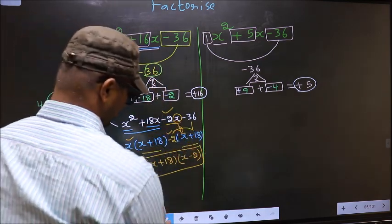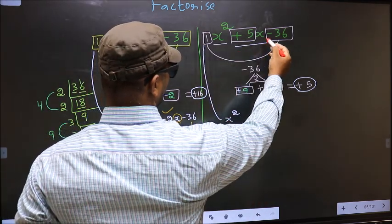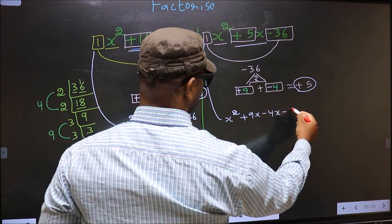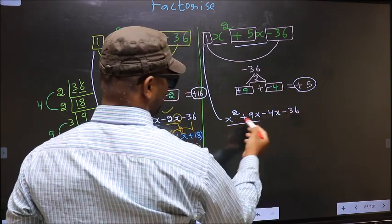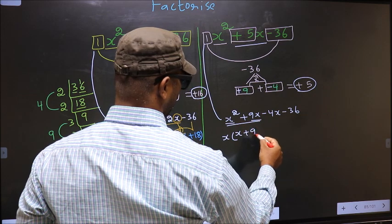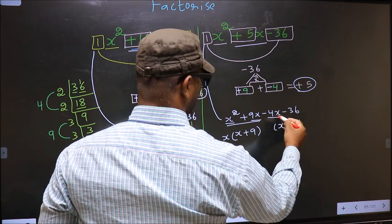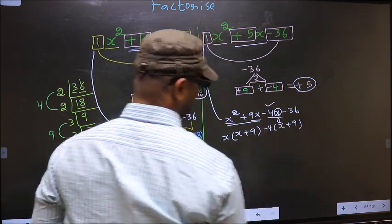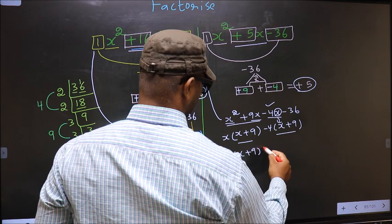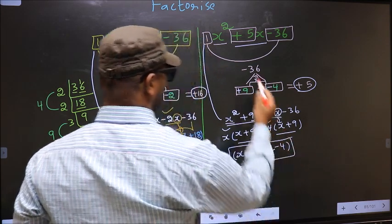Now, for x² + 5x - 36: in place of +5x we write +9x - 4x, giving x² + 9x - 4x - 36. From the first two terms, take out x common: x(x + 9). From the last two terms, take out -4 common: -4(x + 9). Now take out (x + 9) common, giving (x + 9)(x - 4). This is the answer for this one.